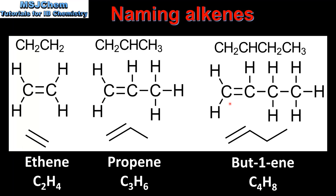Once we get to four or more carbon atoms there's more than one position for the carbon to carbon double bond. In this example the carbon to carbon double bond is between carbon number one and carbon number two. When numbering the carbon atoms, the position of the double bond is given the lowest possible number, so this example is named but-1-ene. If the carbon to carbon double bond is located between carbon number two and carbon number three, the name is but-2-ene.